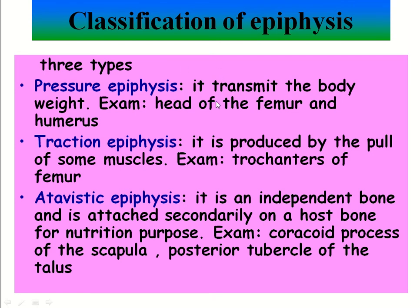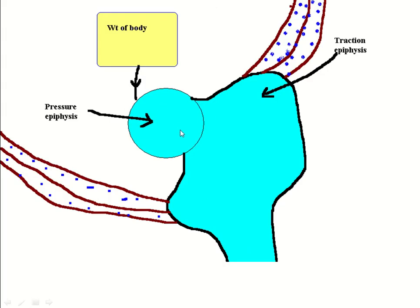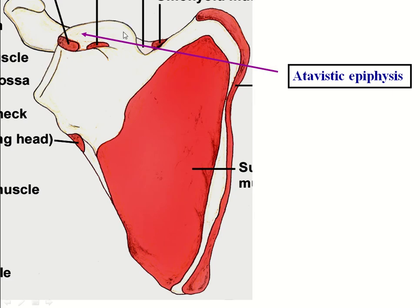The classification of epiphysis — there are three types. First, pressure epiphysis: it transmits body weight, e.g., head of the femur and humerus. Second, traction epiphysis: it is produced by the pull of some muscles, e.g., trochanter of femur. Third, atavistic epiphysis: it is an independent bone attached secondarily on a host bone for nutrition purposes, e.g., coracoid process of scapula and posterior tubercle of talus. The head of femur is an example of pressure epiphysis; the greater and lesser trochanter are examples of traction epiphysis; and the coracoid process of scapula is an example of atavistic epiphysis.